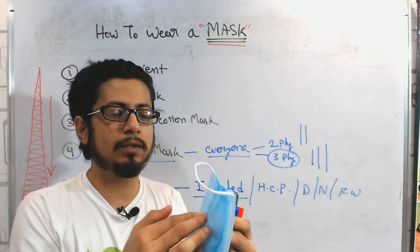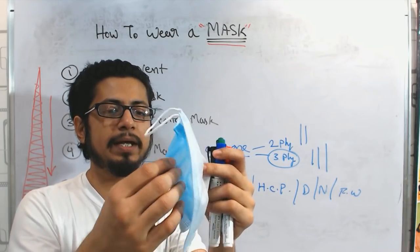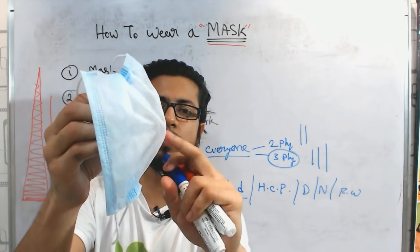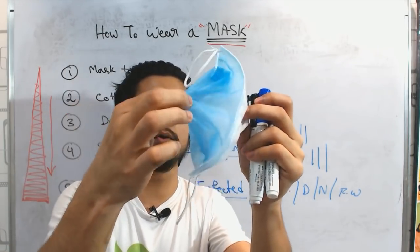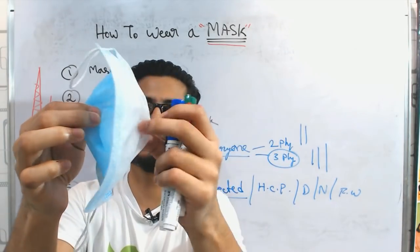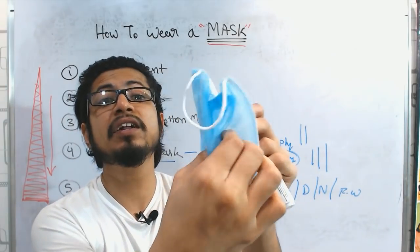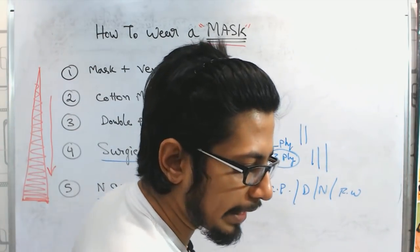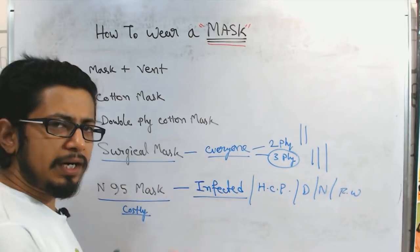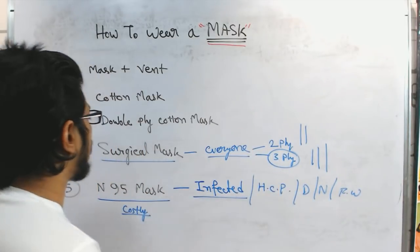Now this particular surgical mask is a three ply mask. How you can see? This is one, the white color one. This is one, the blue color one outside. This is one, white one is inside and in the middle we have another layer. You can clearly see there is another layer, you can clearly feel it. So this is a three ply surgical mask. So there are also two ply masks, better to wear three ply surgical mask.